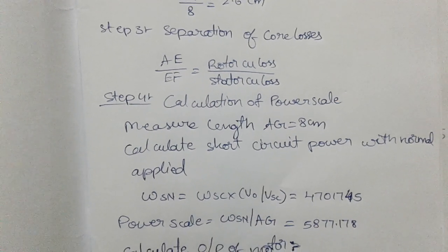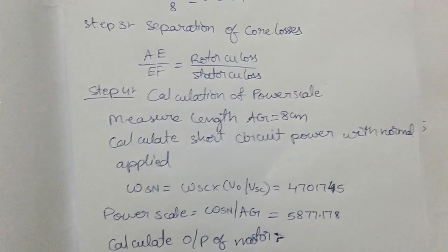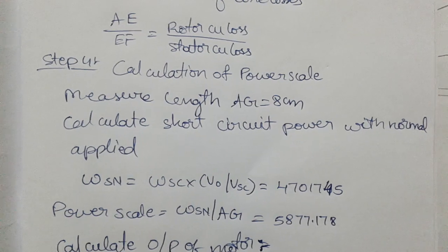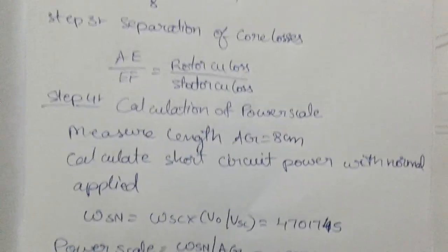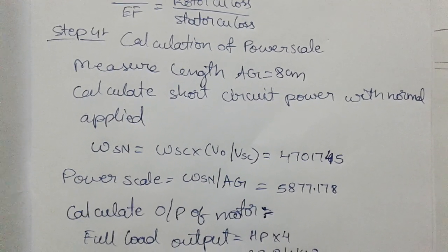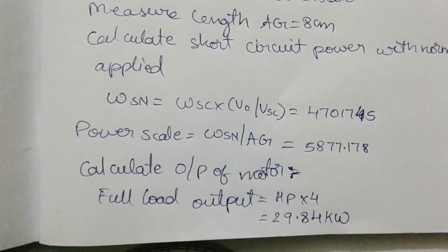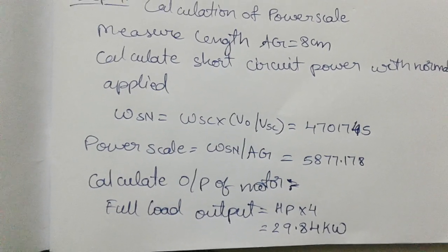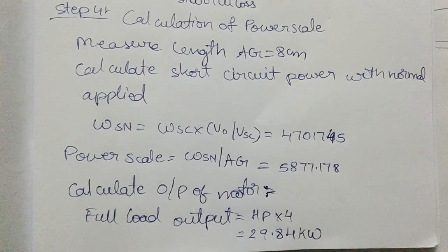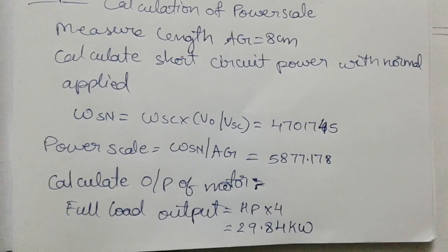Next, calculate the power scale. Measure the total length of AG, which equals 8 cm. Calculate the short circuit power at normal voltage: WSN equals WSC multiplied by V0 divided by VSC, giving 47014.45 watts. The power scale is WSN divided by AG, which gives 5877.178 watts per centimeter.